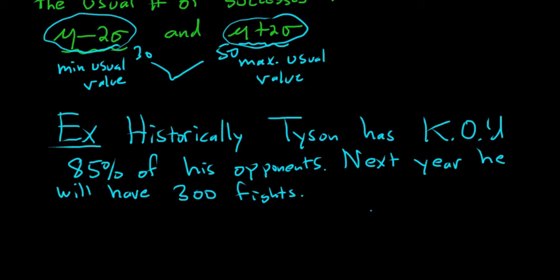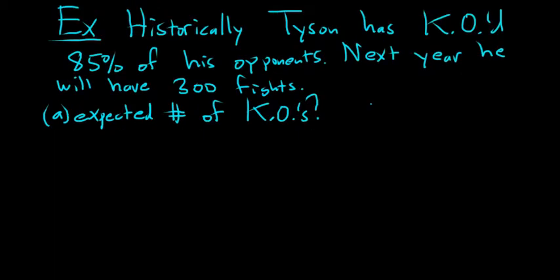So we want part A, the expected number of KOs. Let's find the expected number of KOs. So we have to find the expected value, basically.